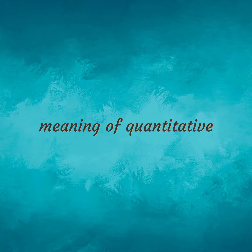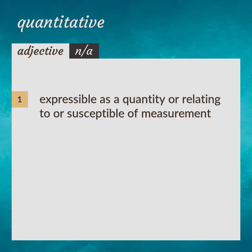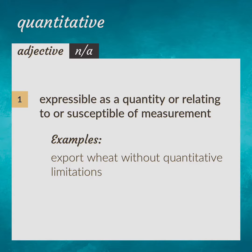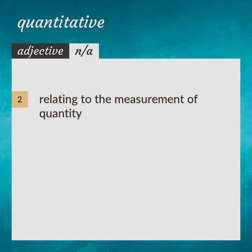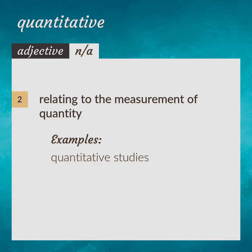Meaning of quantitative: expressible as a quantity, or relating to or susceptible of measurement. Example: export wheat without quantitative limitations. Also, averse — having a metric system based on relative duration of syllables. Relating to the measurement of quantity. Quantitative studies.